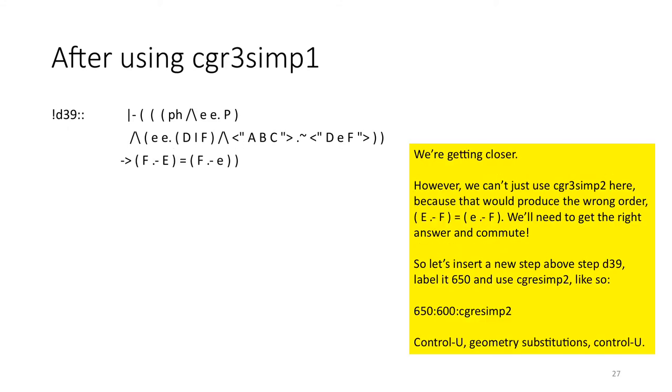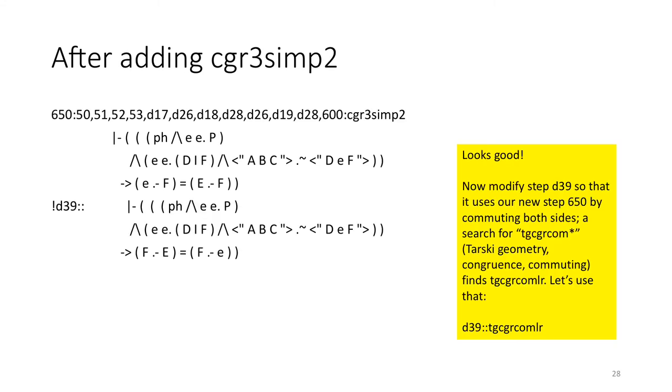Excellent, we're getting closer. However, we can't just use CGR3SIMP2 here because that would produce the wrong order. That would produce EF is equal to little eF. We need to get the right answer and commute. So let's insert a new step above step D39. We'll label it 650 and use CGR3SIMP2 like this. CTRL-U, geometry substitutions, CTRL-U. This looks good. Now modify step D39 so it uses our new step 650 by commuting both sides. A search for TGCGRCOM finds TGCGRCOMLR. Let's use that.